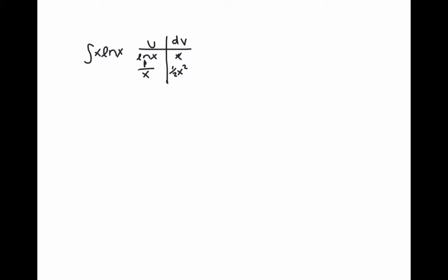Next we cross multiply like we did before, where this is positive and this is negative. Then when we go to set up our equation it will look like this: 1 half x squared times ln of x minus integral of 1 over x, 1 half x squared dx.